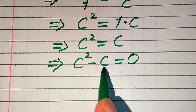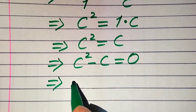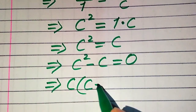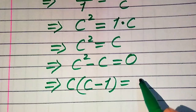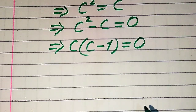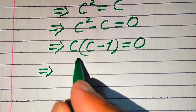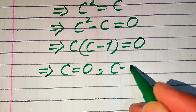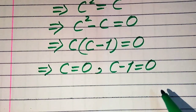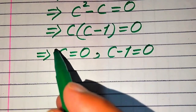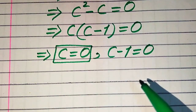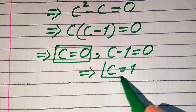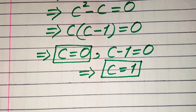After moving c to the left-hand side it becomes c squared minus c equals 0. Both terms involve c, so we take c as a common factor. When we factor out c, we get c times (c minus 1) equals 0. This gives us two cases: the first case is c equals 0, and the second case is c minus 1 equals 0, giving c equals 1. These are our two roots.